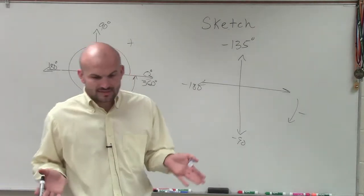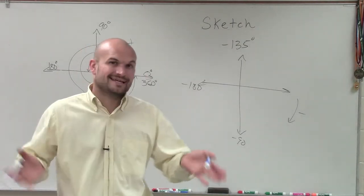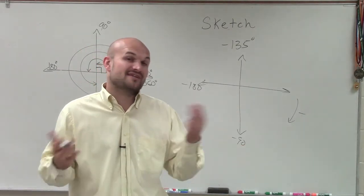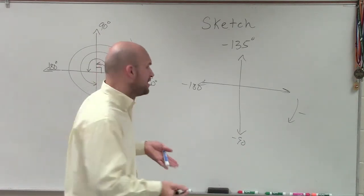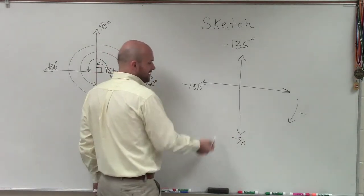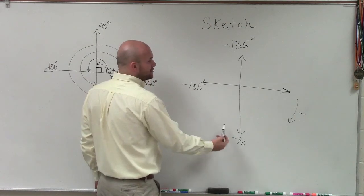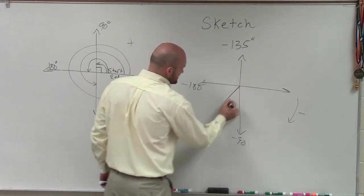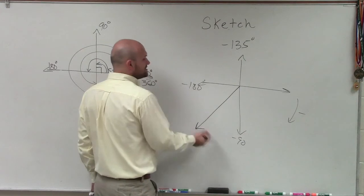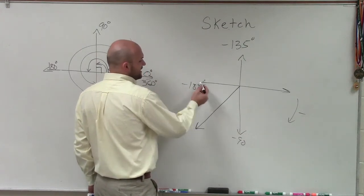And if I take, so to go to 90 to 180 is 90 degrees. If I divide that by 2, that's 45. Well, 45, let's pretend negative 45. Negative 45 plus negative 90 would be negative 135. So that's going to be exactly halfway in between of my negative 90 and negative 180.